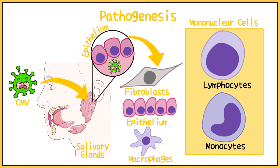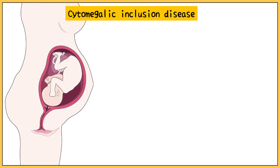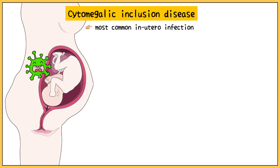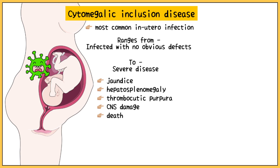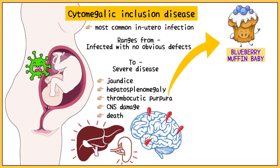The disease caused by the virus is called cytomegalic inclusion disease. It is most commonly transmitted in utero. The symptoms range from infection with no obvious defects to severe disease, which includes jaundice, hepatosplenomegaly, thrombocytic purpura, CNS damage, or even death. Of these, thrombocytic purpura has led to the development of the name 'blueberry muffin baby.' Here is a clinical image for you to correlate.